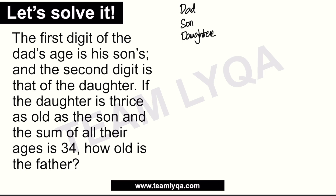When you encounter this type of question in an exam, the wording might be different — it could be friends or grandparents instead. But the concept remains the same. The first digit of the dad's age is the son's age, and the second digit is the daughter's. The daughter is thrice — that means three times — as old as the son. So we let the son's age be x, and the daughter's age is 3x.